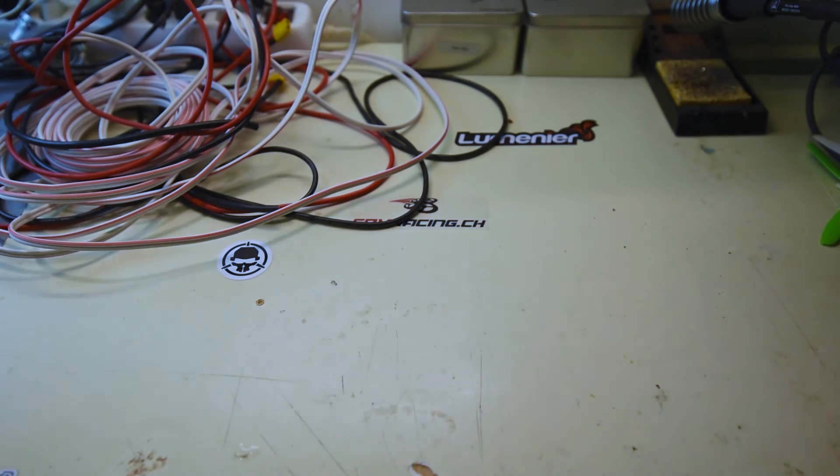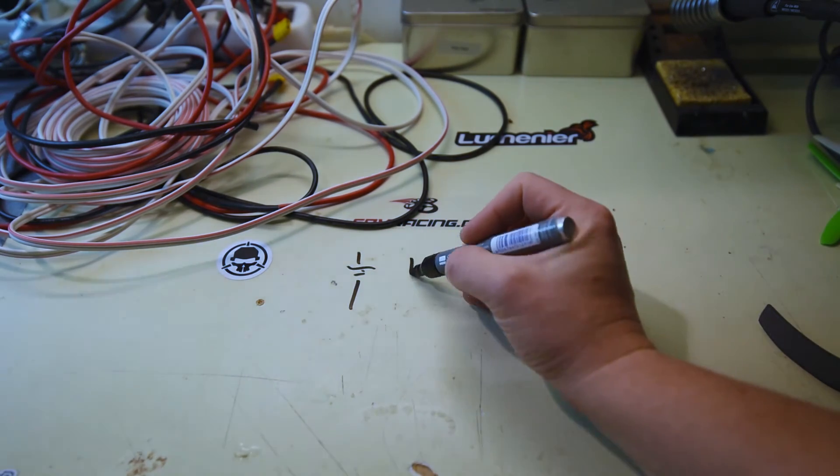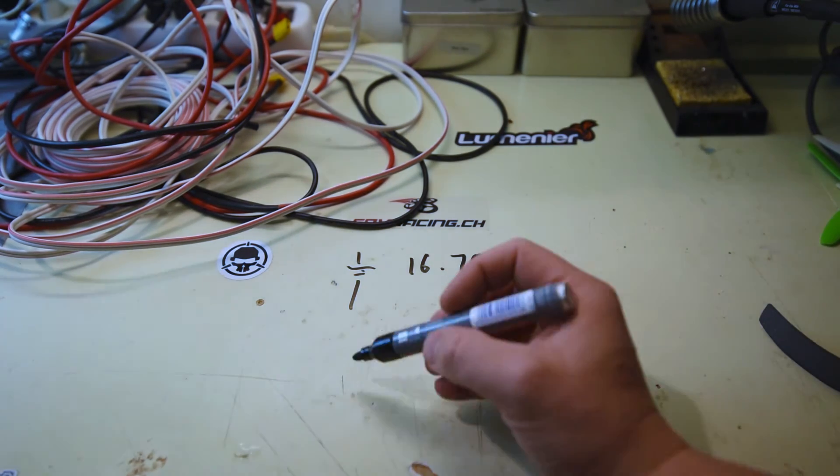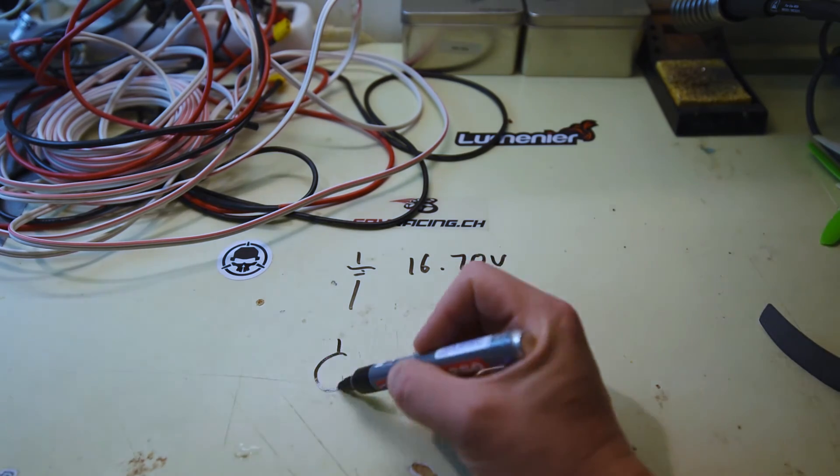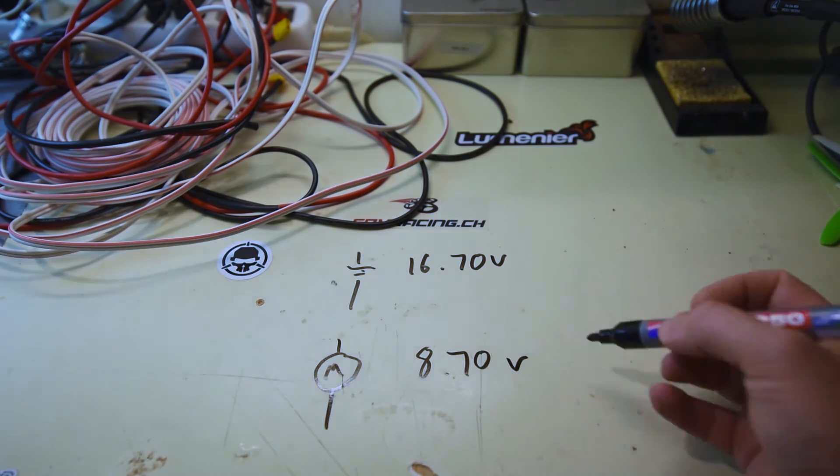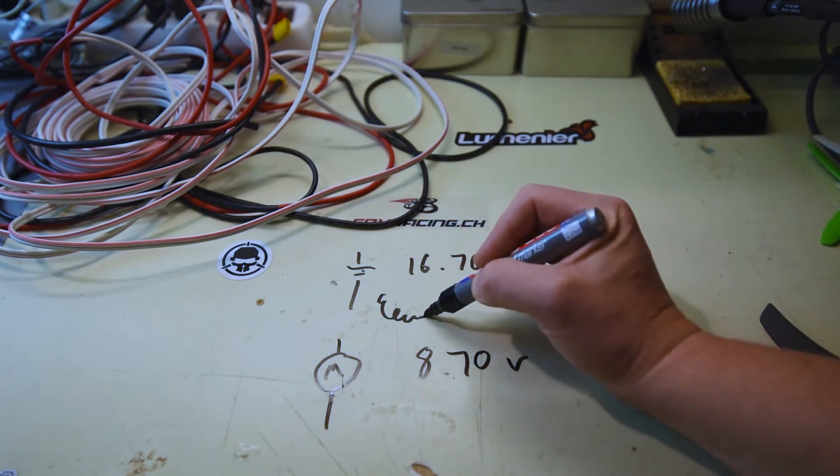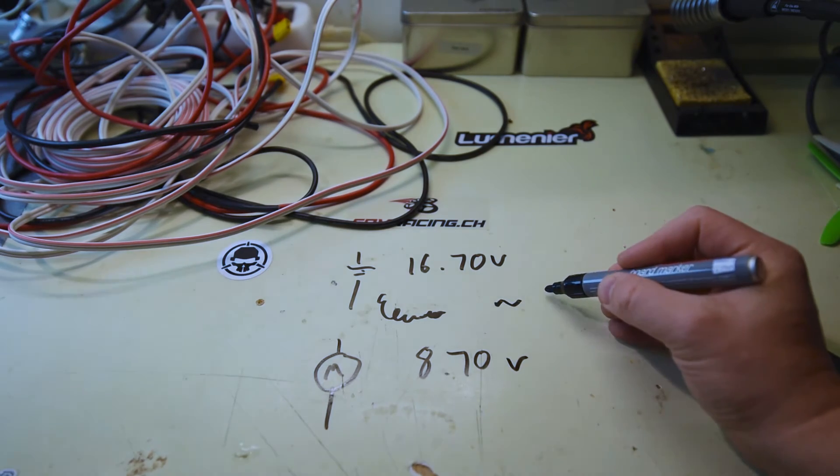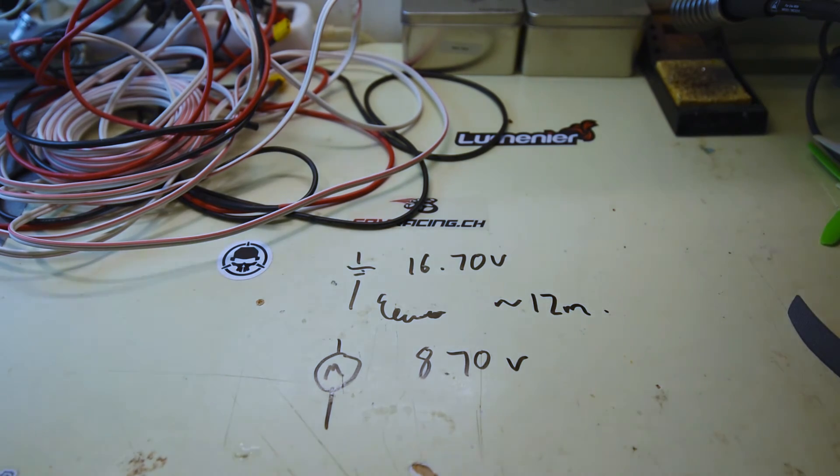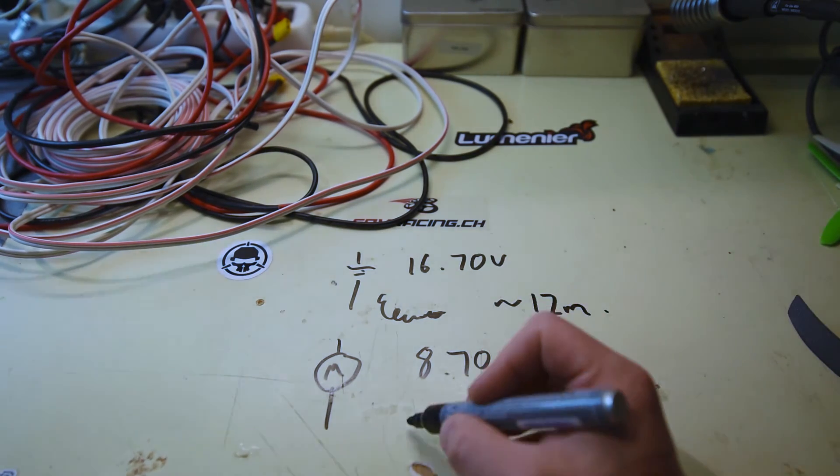Alright. So what happened there? What did we see there? We saw that on the battery side, I'm going to just draw a battery indicator, we had 16.7 volts about. On the motor side, so let's just draw a motor symbol here, we had 8.7 approximately. It doesn't really matter. And then in between this whole thing, we had a lot of wire, about I'd say about 12 meters of wire. So what went wrong here? So the difference in voltage here is 8 volts. So we lost 8 volts.